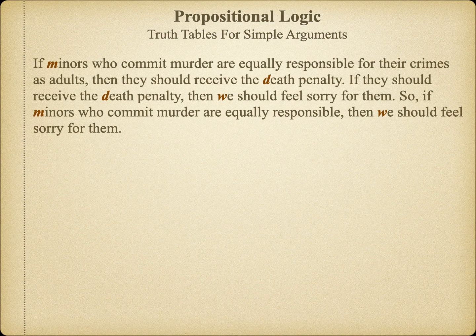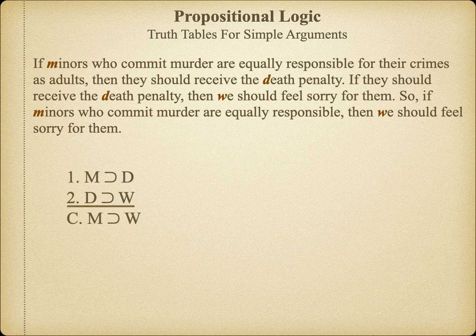The more terms that appear in an argument, the more complex our truth table is going to be. If minors who commit murder are equally responsible as adults, then they should receive the death penalty. If they should receive the death penalty, then we should feel sorry for them. So if minors are equally responsible, then we should feel sorry for them. In this argument, we have three hypothetical claims — two premises and one conclusion. The proposition D appears in both premises but not in the conclusion, not unlike the middle term in categorical syllogisms. Since D is the consequent of the first premise and the antecedent of the second, it acts as a connector between M and W — similar to the transitive property in mathematics.